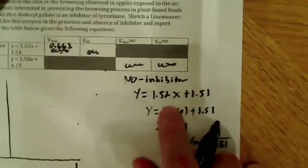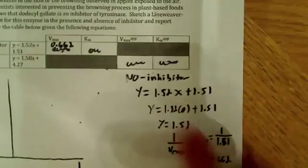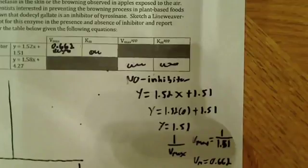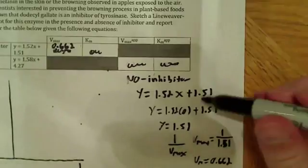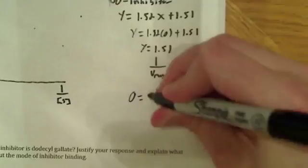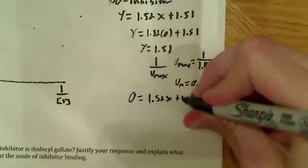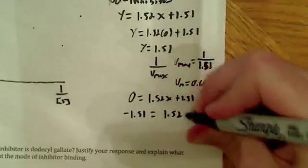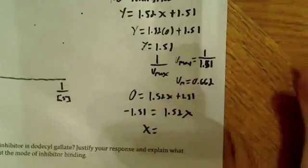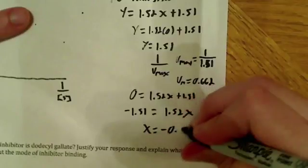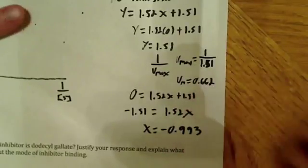Now if I wanted to use the same equation to get the x-intercept, because the x-intercept corresponds to the Km, all I'd have to do is set y equal to 0. So if I set y equal to 0, I'll set y equal to 0. So 0 is equal to 1.52x plus 1.51. So I'm going to subtract 1.51 from both sides and I'm going to be left with 1.52x, and I'm going to say x is equal to negative 1.51 divided by 1.52, and I get something like this, negative 0.993.